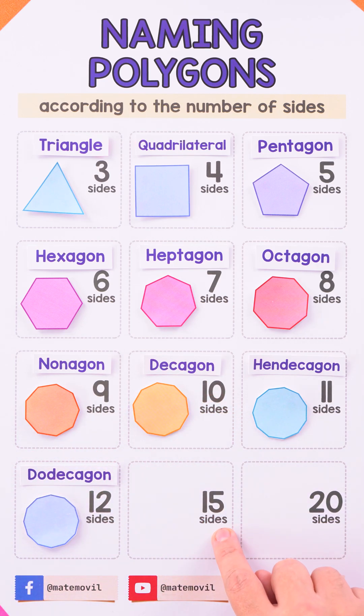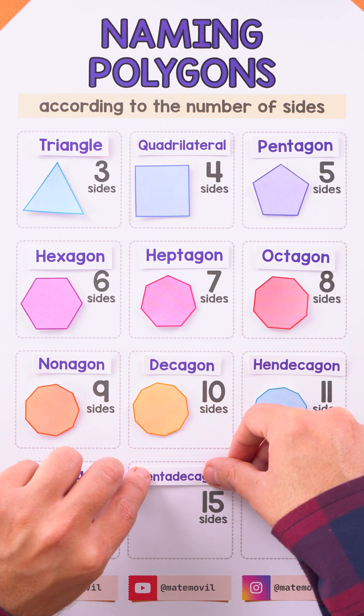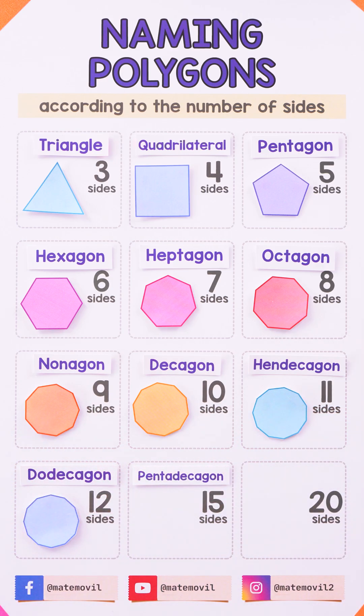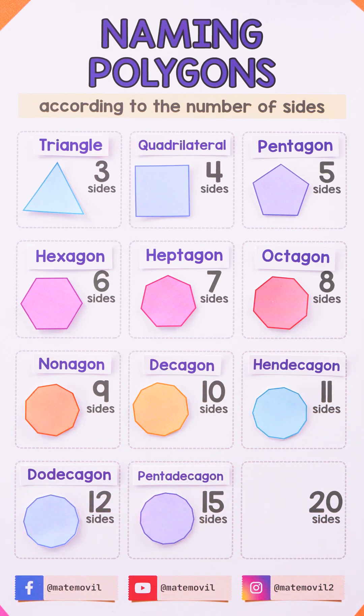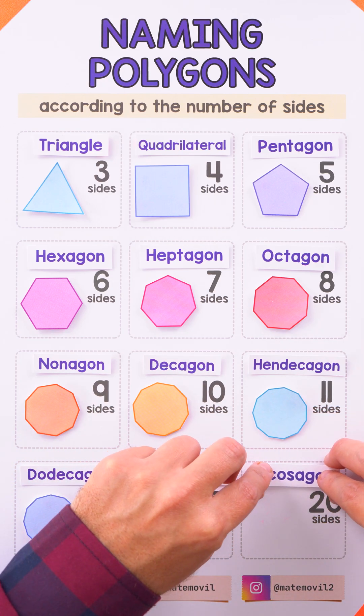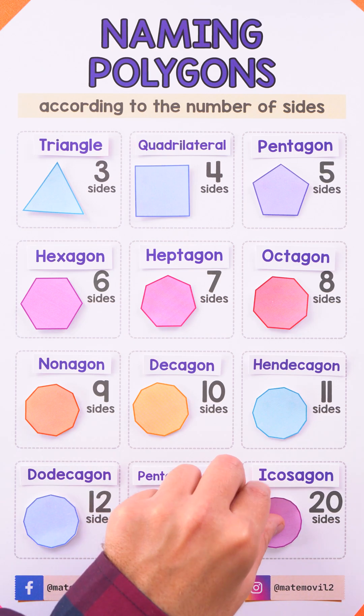Now we have the polygon with 15 sides — this polygon is called a pentadecagon. Finally, the icosagon is the polygon with 20 sides.